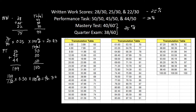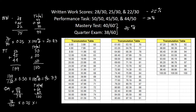Next up is the quarterly assessment. For the mastery test we have 40 and for the quarterly test we have 38, adding to 78. The total is 60 plus 60, which equals 120. So we compute 78 divided by 120, times 0.25, times 100 percent, which equals 16.25.